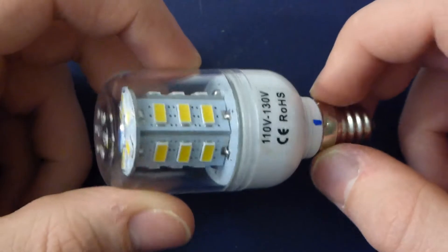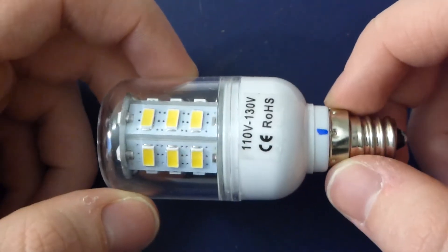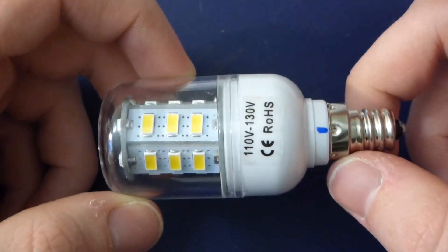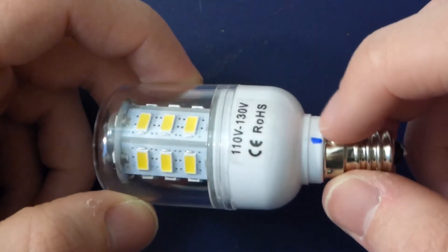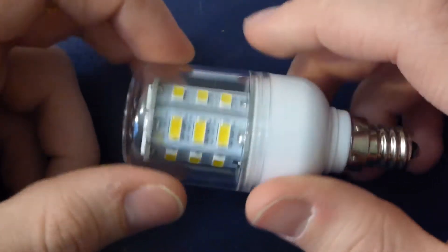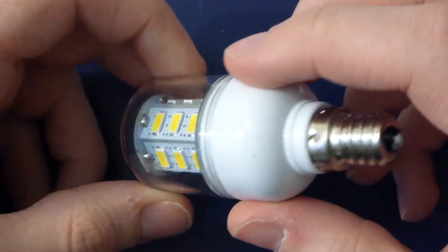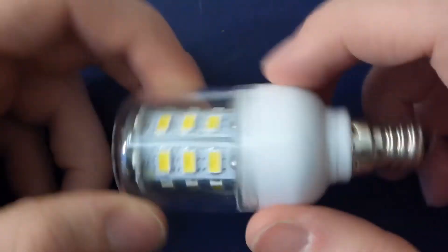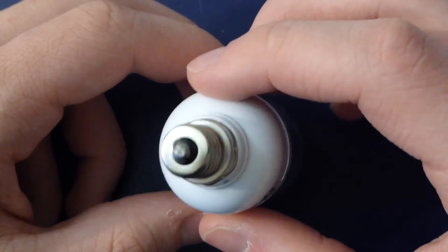I ordered 10 warm white and they shipped me 6 warm white and 4 cool white. That's why I've marked this one with a little blue marking here - this is a cool white version. So they screwed up there. I'm not too bummed out about it, I'll just mix and match them.